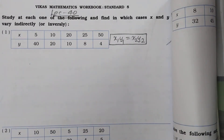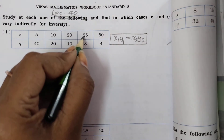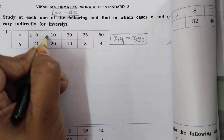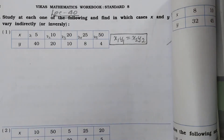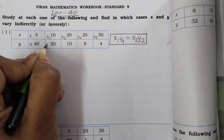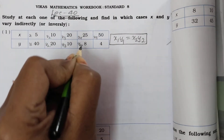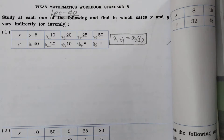अब आपको check करना है कि given table में x and y inversely proportion हैं या नहीं। तो पहले हमारे पास x की values हैं: 5, 10, 20, 25, 50 — इन्हें x1, x2, x3, x4, x5 की तरह consider करना है। उसी तरह y1, y2, y3, y4, y5 लेना है। अब आपको check करना है कि क्या x and y इस formula को satisfy करती हैं।